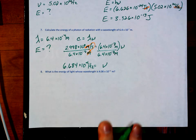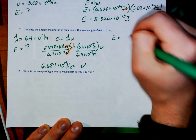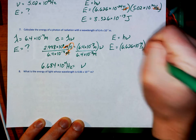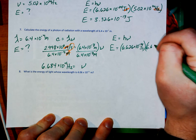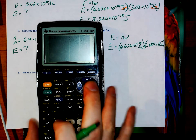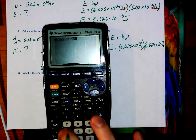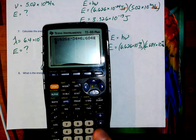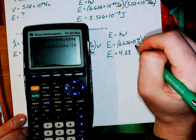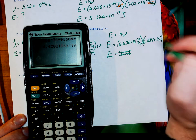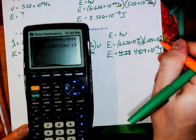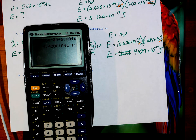Now that I've got a frequency, I can use it to find energy using my second equation, E equals H nu. The energy of this wave equals Planck's constant, 6.626 times 10 to the negative 34th joule seconds, multiplied by the frequency I just found, 4.684 times 10 to the 14th hertz. Plugging into the calculator: 6.626 E negative 34 times 4.684 E14. Rounding correctly, the energy is 4.429 times 10 to the negative 19th joules — hertz and seconds cross out, leaving only joules. That is my answer.